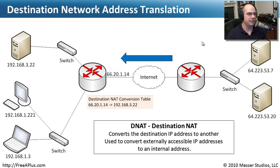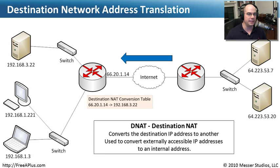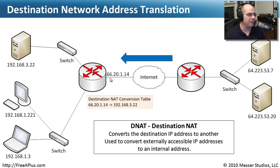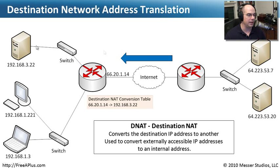The reverse case is called destination NATing — there is a public IP address on the internet that someone else communicates to, and the router knows that traffic to that particular address needs to go to a specific server on the inside. For example, if an external device at 64.22.35.7 wants to talk to a machine behind a firewall that has a local address, we assign an external address and tell our router: anytime anybody goes to 66.21.14, send them to 192.168.3.22. The external device only knows it's talking to 66.21.14, and your local router handles all the destination NAT translation behind the scenes.